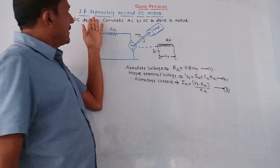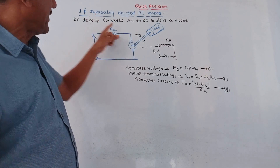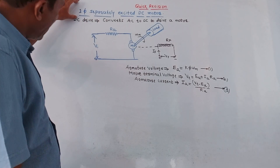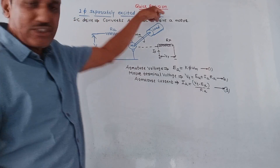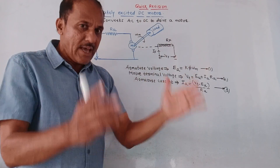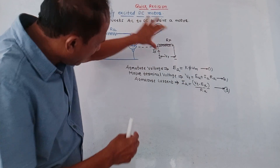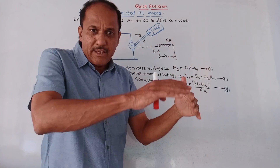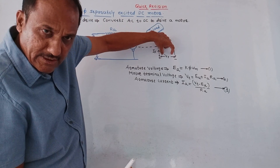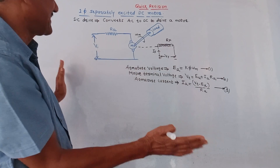Now let us discuss DC drives. A DC drive is a circuit which converts AC to DC to drive a particular motor. For a single phase separately excited DC motor, this is the simplified diagram. The word 'separately excited' means the armature windings and field windings are powered by separate connections — field winding and armature winding are connected to different supplies.